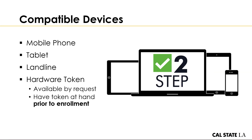Some of the compatible devices are mobile phones and tablets, landlines, and hardware tokens. Hardware tokens are available by request, and we ask you to have your hardware token before you go to enroll in Two-Step. That also includes signing up on the web page — this is just so that you don't run into any issues trying to log into your account after having signed up already.